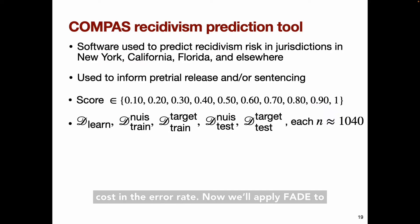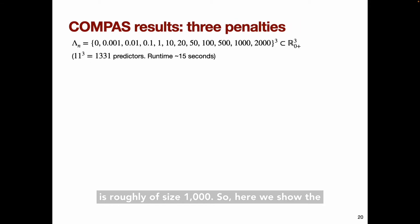Now we'll apply FADE to COMPAS. Here we're using a version of COMPAS that's expressed in deciles from 0.1 to 1. We split our data here, and each fold of our data is roughly of size 1,000. So here we show the results of applying three penalties simultaneously. The whole process of training the basis predictors and the nuisance parameter models, computing the aggregated predictors, and estimating the loss and fairness values of those predictors took around 15 seconds on my laptop from 2013.